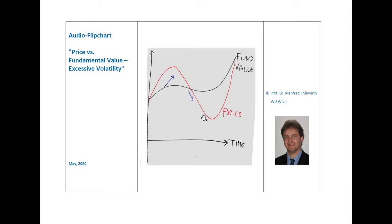Andrei Kostolany, the Hungarian stock exchange guru, once compared this phenomenon with a dog on a leash. The dog runs in front of the master and may run behind the master, but it always returns and oscillates only within the interval determined by the leash. Transferring this to the stock exchange: the master is the fundamental value — the economy — whereas the dog is the stock price.